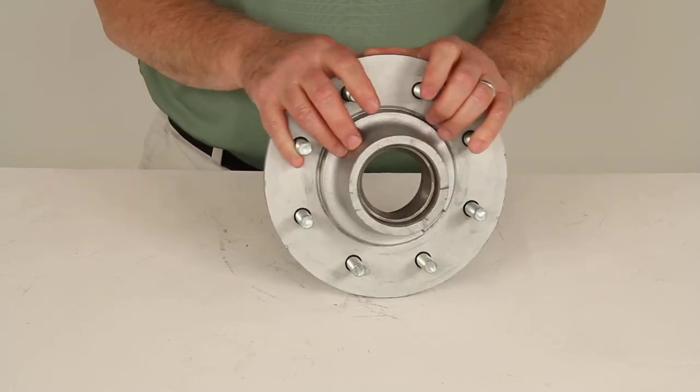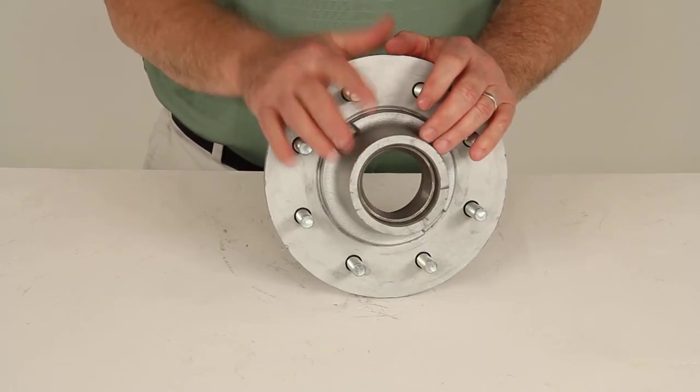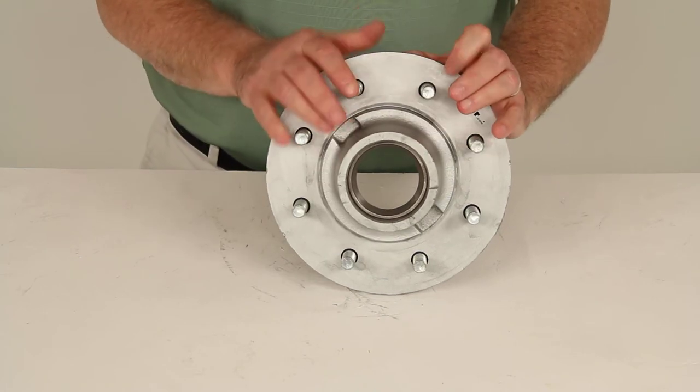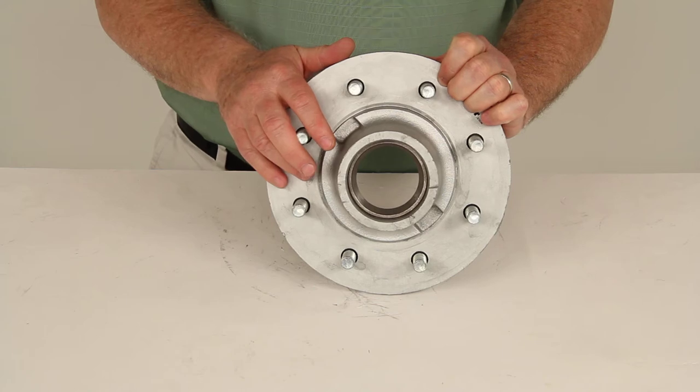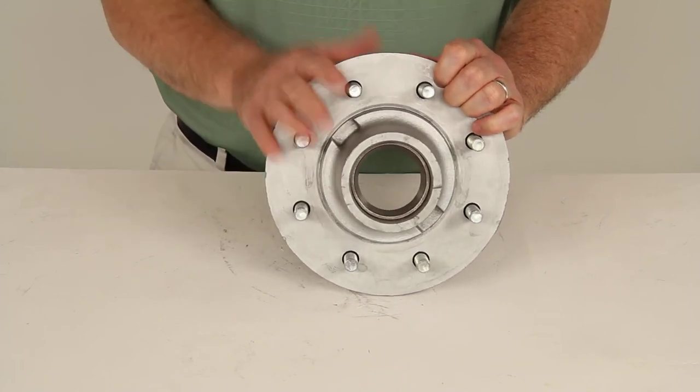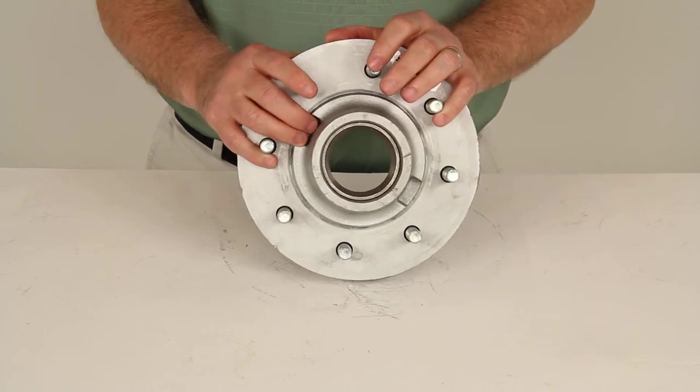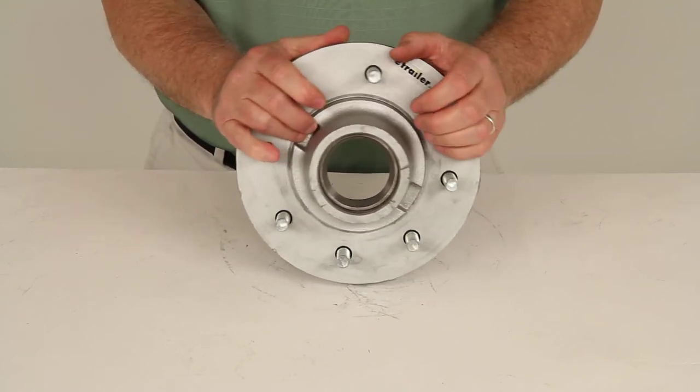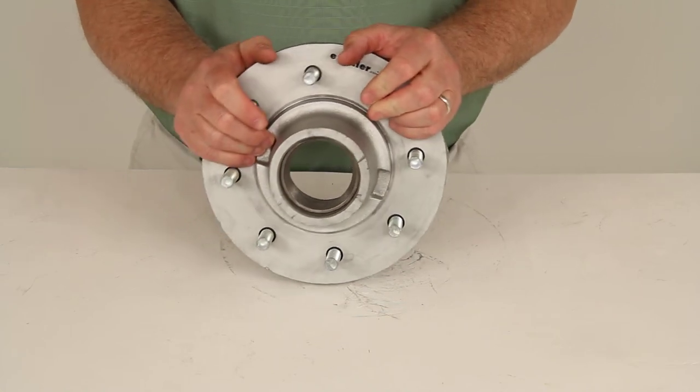The application on this hub is 5,200-pound axles, 6,000-pound axles, and 7,000-pound axles. The bolt pattern is 8 on 6 1/2 inches. The wheel studs diameter is 1/2 inch. Weight capacity on one of these hubs is 3,500 pounds, so when matched with one on the other side on the axle, it'll get you your maximum of 7,000 pounds.